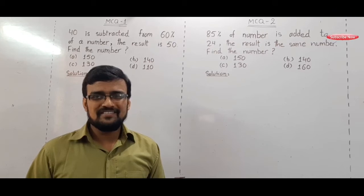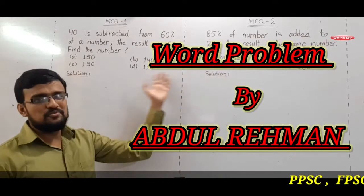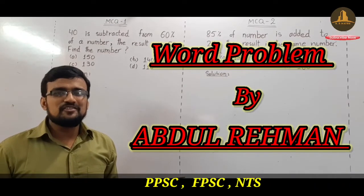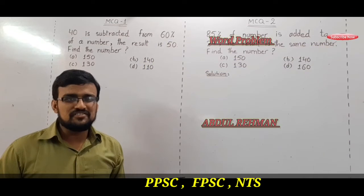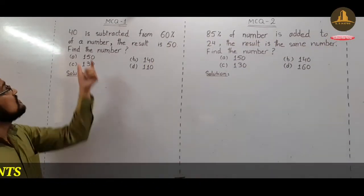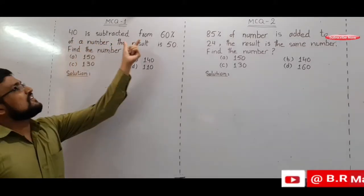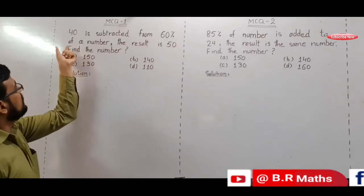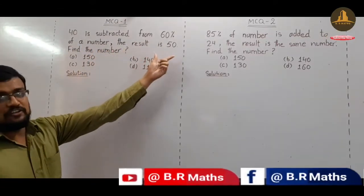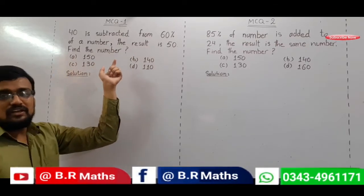Assalamualaikum viewers. Today I am discussing these two important MCQs which are related to algebraic number systems. The first MCQ is: 40 is subtracted from 60% of a number, the result is 50. Find the number.